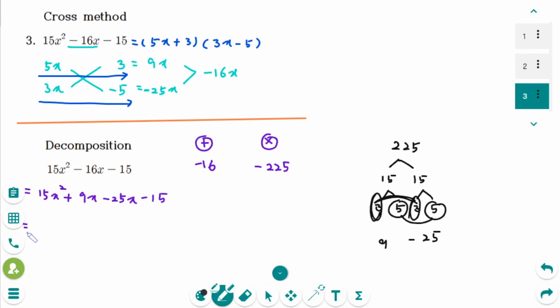And then you can factor out 3x in first two terms. So, 5x plus 3 is left over. And minus 5 in the last two terms. So, 5x plus 3. And then, 5x plus 3 is common factor. So, take out common factor. Inside the bracket is 3x minus 5.